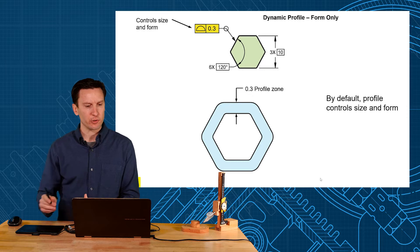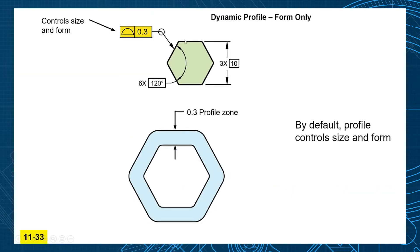Let me first introduce it with a normal profile tolerance. Here I have a hexagon shape that I want to be basic dimensions of 120 degrees and 10 millimeter distances across there. So how much variation would you allow? That's perfect for a profile tolerance. Profile within 0.3 all around.